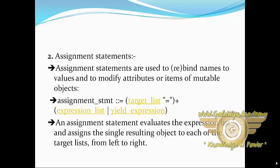list is recursively defined as follows: if the target is a single target, the object is assigned to that target. If the target list is a comma-separated list of targets, the object must be an iterable with the same number